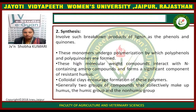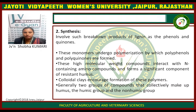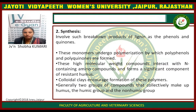The second process is synthesis. In the synthesis process, breakdown products of lignin such as phenol and phenols — these monomers undergo polymerization, by which polyphenols are formed. These high molecular-weight compounds interact with nitrogen-containing amino compounds and form the significant resistant compound: humus. The colloidal clay catalyzes the formation of these polymers.